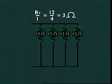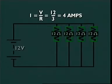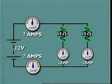3 ohms is the total resistance in the circuit. Ohm's law confirms the ammeter reading of 4 amperes.